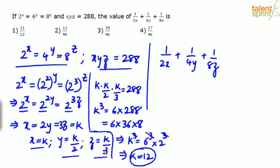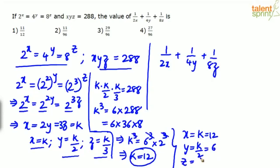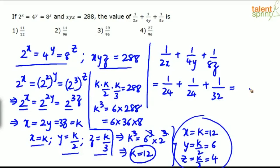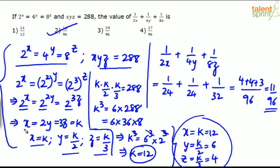So x = 12, y = 6, z = 4. Now substitute into the required expression: 1/(2×12) + 1/(4×6) + 1/(8×4) = 1/24 + 1/24 + 1/32. The LCM of 24 and 32 is 96. So: 4/96 + 4/96 + 3/96 = 11/96.